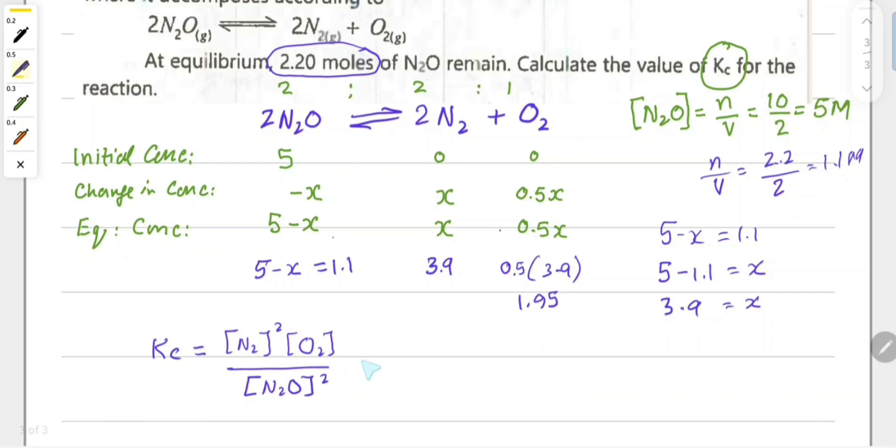Substituting the values: nitrogen gas is 3.9, so 3.9 squared, oxygen is 1.95, divided by dinitrogen oxide which is 1.1 squared.